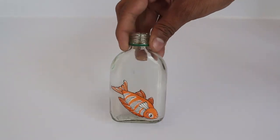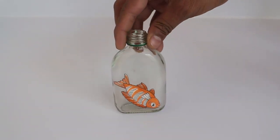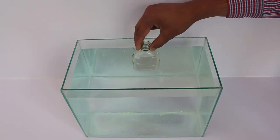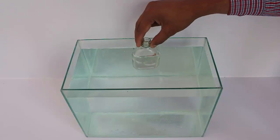Now dip the empty bottle with the fish in a tank full of water. As the bottle dips in water, the fish disappears.